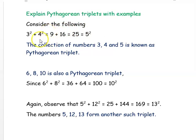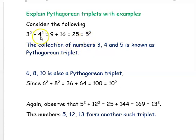Consider the following. We know that 3² + 4² = 9 + 16 = 25, which is nothing but 5². So we can say that the collection of numbers 3, 4, and 5 is known as a Pythagorean triplet, since 3² + 4² = 5².